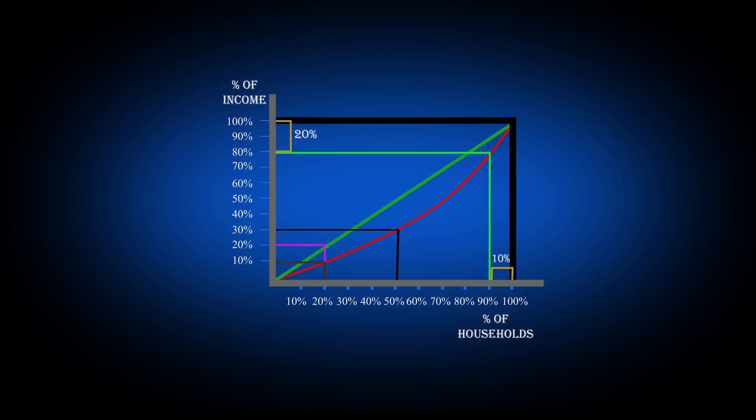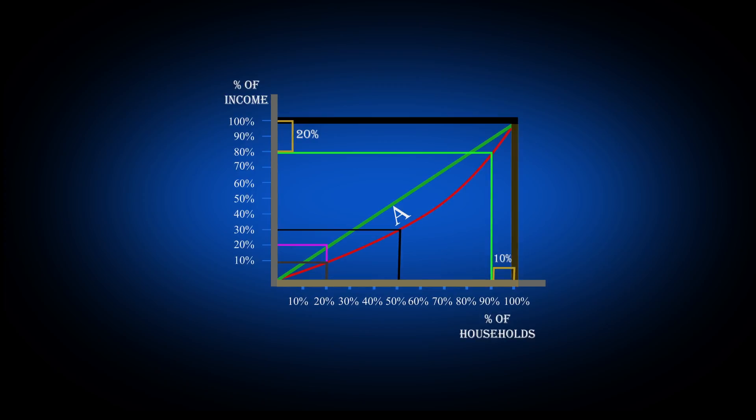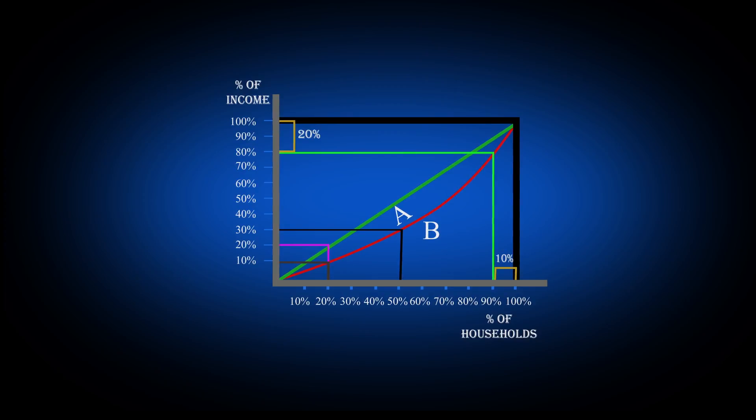We will be labeling the area between the line of equality and the Lorenz curve as area A, and we will be labeling the area between the Lorenz curve and the 90 degree angle as area B, which represents the perfect inequality.